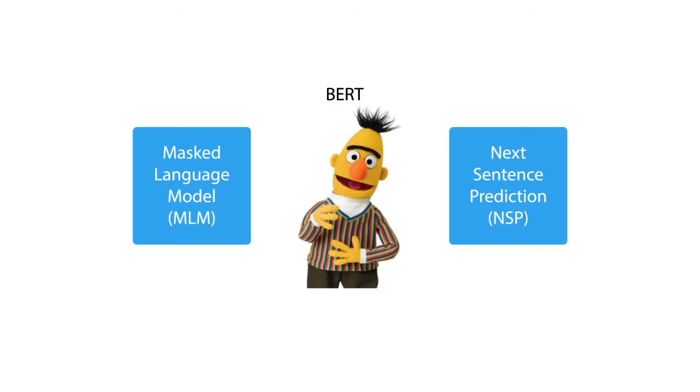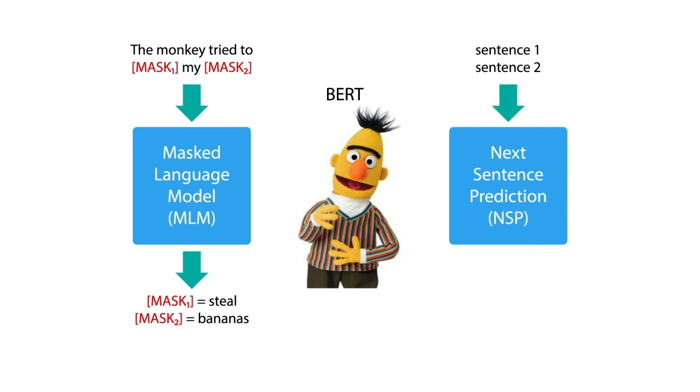BERT learns language via two unsupervised tasks simultaneously. Task number one: BERT takes in a sentence in which certain words are masked and outputs the masked tokens. Task two: BERT takes in two sentences, one and two, and outputs true if sentence two follows sentence one.